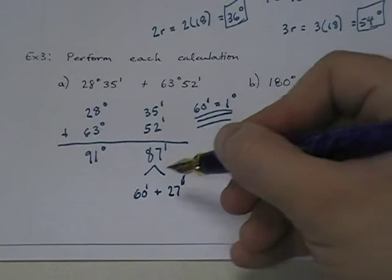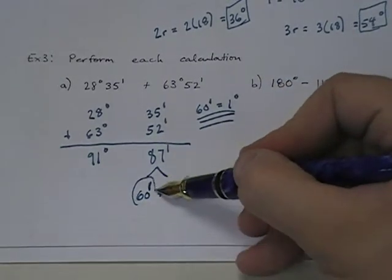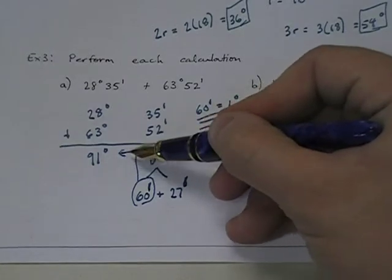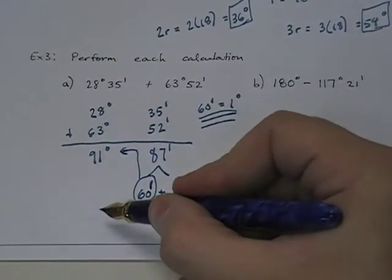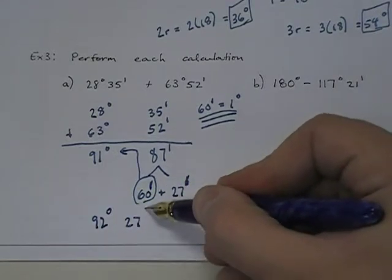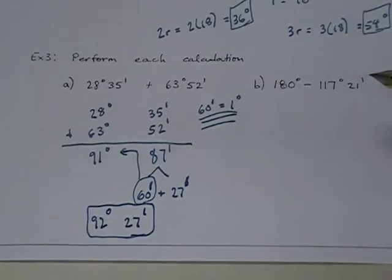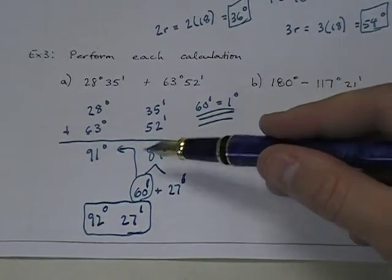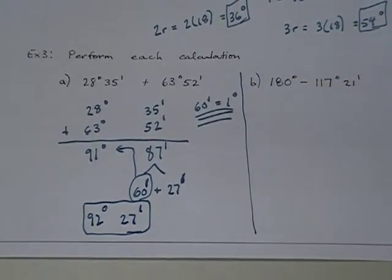So 60 minutes plus 27 minutes. This 60 minutes is going to come over here as 1 degree. And so what I actually end up with is 92 degrees 27 minutes. Because 60 minutes is equal to 1 degree, I take that 60 and bring it over into the degrees column. So that's the first one.